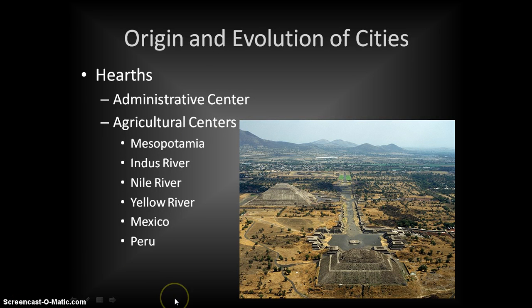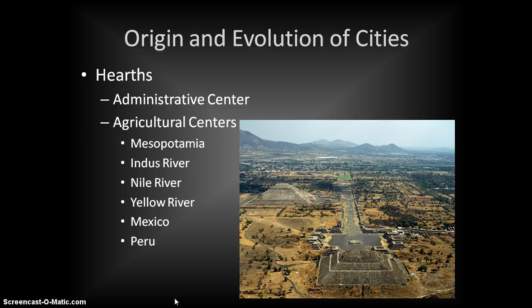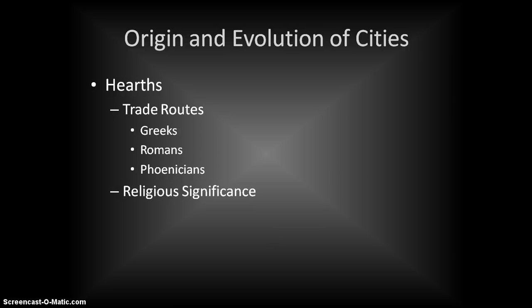Some cities emerged as agricultural centers — cities that developed around agricultural production. Their initial function was really to protect the people living in the surrounding areas and to protect the agricultural production taking place. Trade also occurred between the agriculturalists growing food outside the city and the people inside. Initially this was a fairly closed system — not a lot of extensive trading with far-off cities, but rather between people living outside and inside the city.